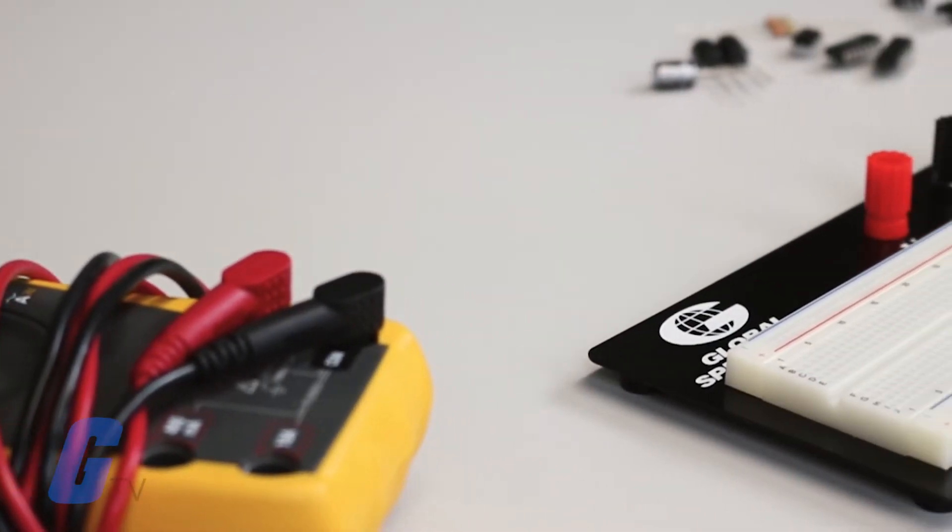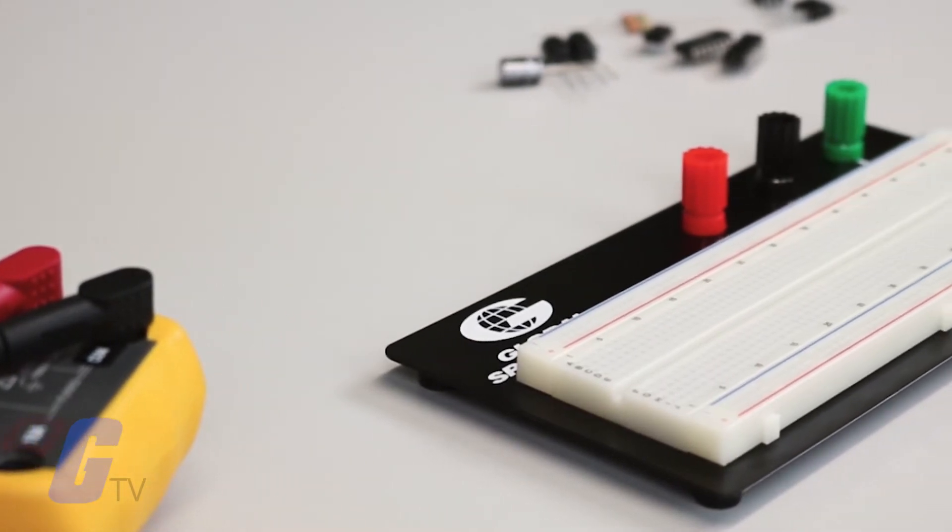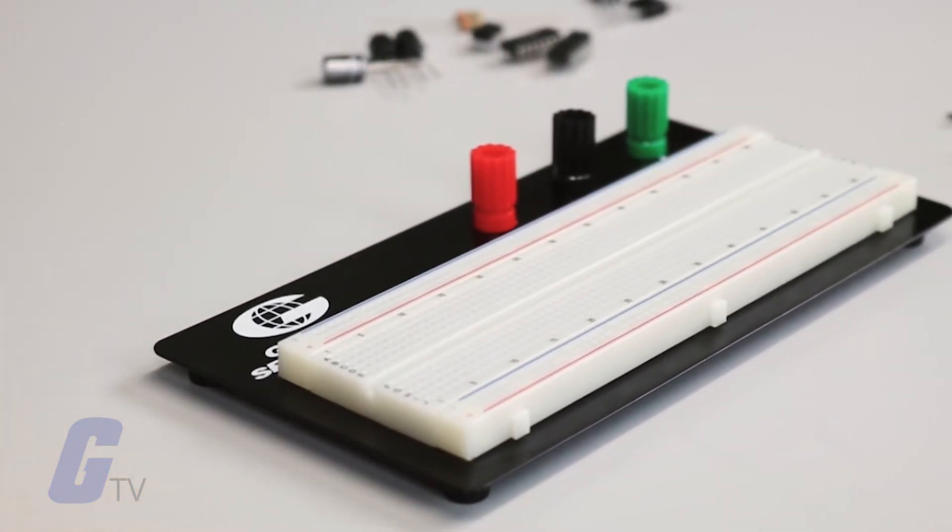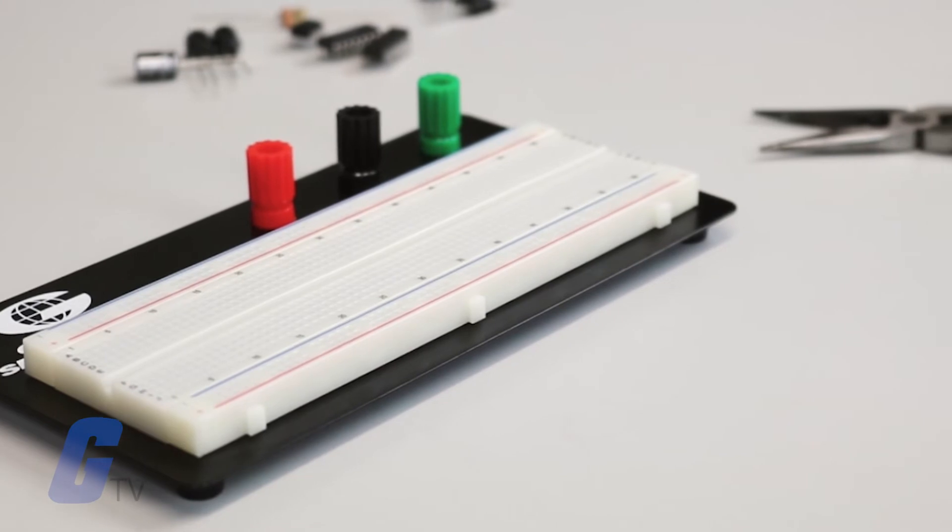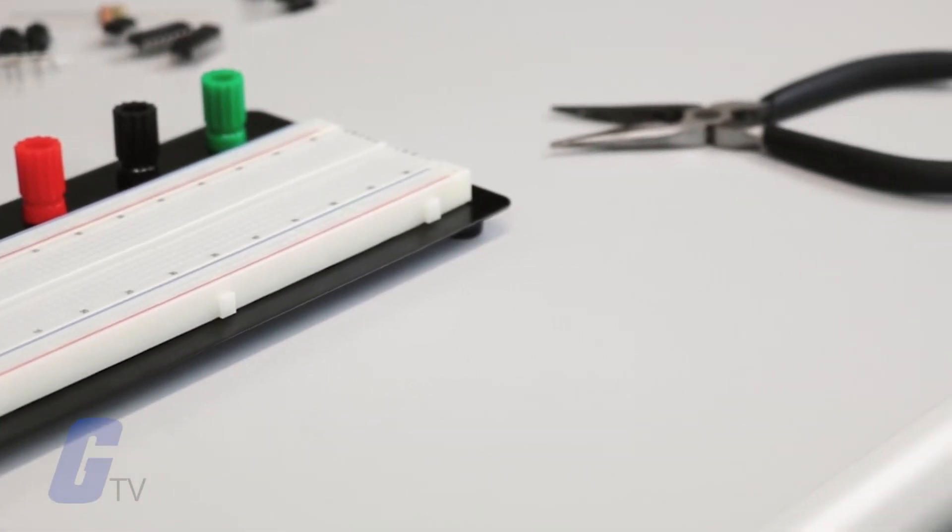Breadboards typically feature numbers, letters, and plus and minus signs written on them. These labels help you locate certain holes on the board so that you can follow directions when building a circuit.